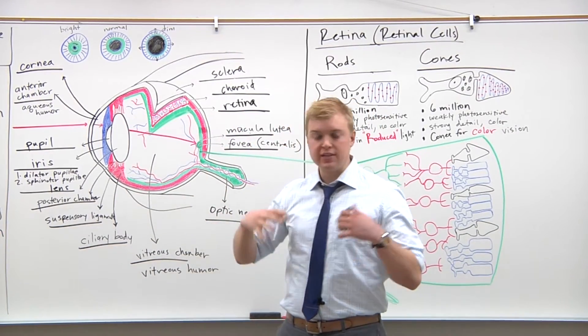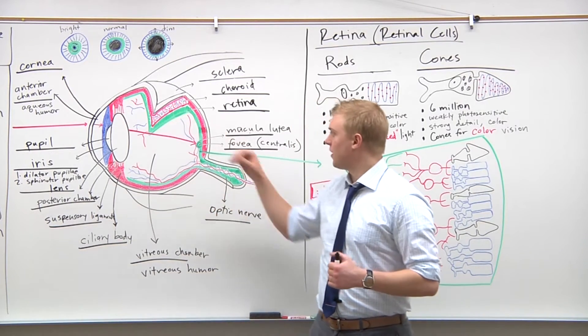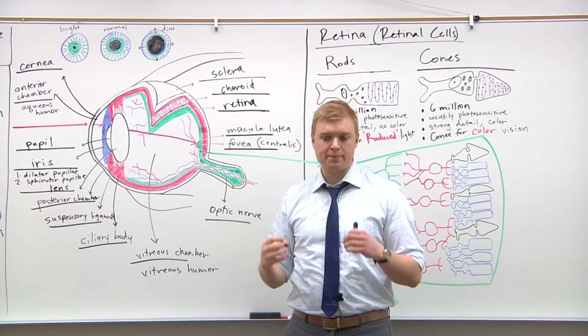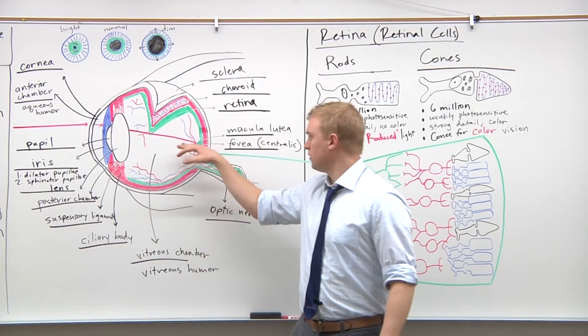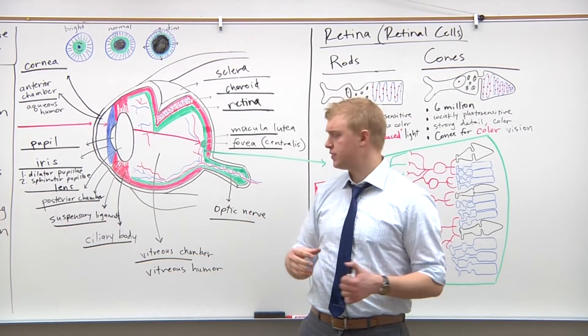So the retina is the moneymaker of the eye. This is why I drew the layer in green. This is where the actual conversion of the incoming photon of light happens, and it becomes an electrical signal in the nervous system.